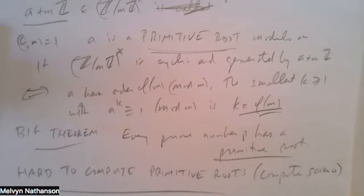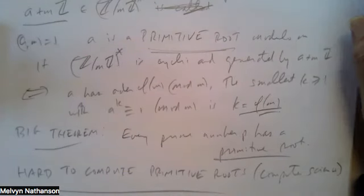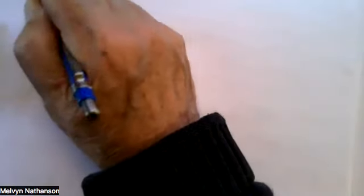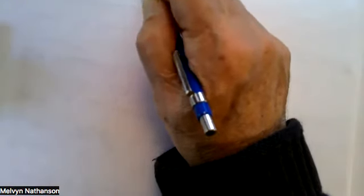I'm going to prove that theorem. The proof involves a lot of algebra and number theory. The bit of algebra we need has to do with polynomials — specifically, polynomials with coefficients in a field. A polynomial f(x) looks like: a_m x^m + a_{m-1} x^{m-1} + ⋯ + a_1 x + a_0.